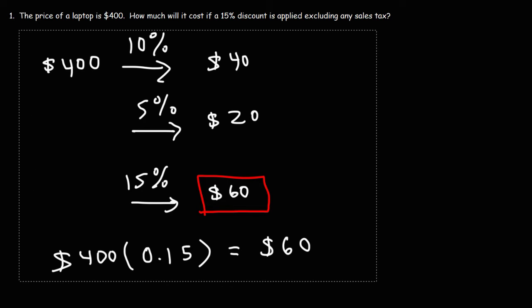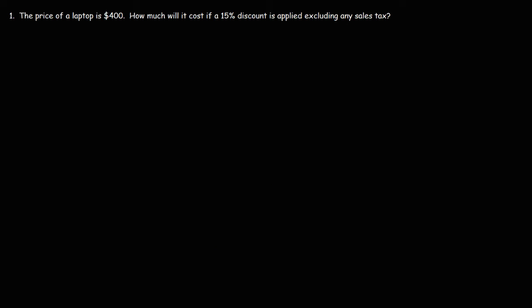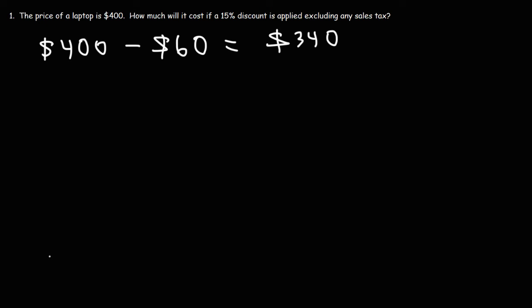Now let's calculate how much it will cost after a 15% discount. The original price is $400, and 15% of $400 is $60. So we're going to discount the price by 15%, or $60. The difference between $400 and $60 is $340. So this is the new price of the laptop after a 15% discount is applied.